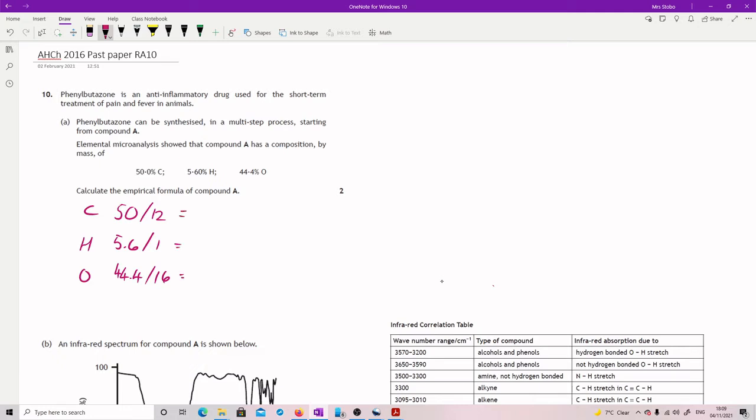So we're going to end up with 4.167, 5.6 and 2.775. Right now we need to get this, so that's what the ratio is but we now need to get it into a ratio you can work with. So the simplest way is to divide by the smallest number you have which is our 2.775.